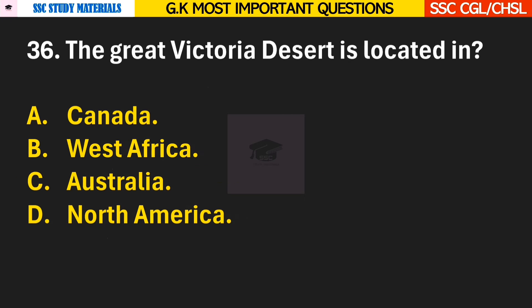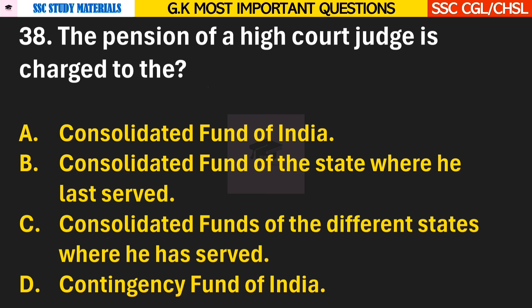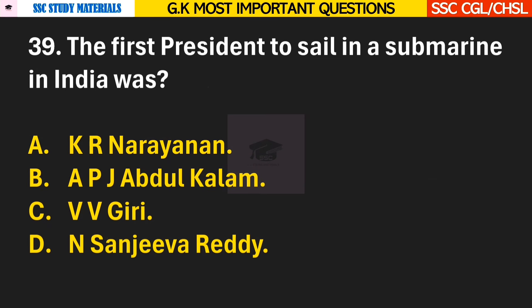Question 36: The Great Victoria Desert is located in? Answer C — it is located in Australia. Question 37: The intersecting lines drawn on maps and globes are? Answer C — Geographic grids. Question 38: The pension of a high court judge is charged to the? Answer A — Consolidated Fund of India. Question 39: The first president to sail in a submarine in India was? Answer B — APJ Abdul Kalam.